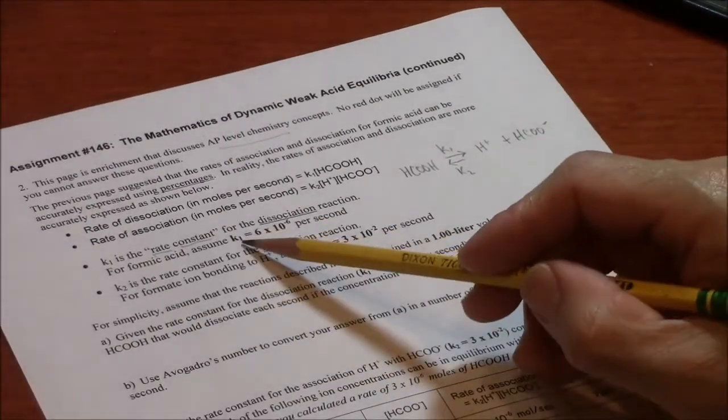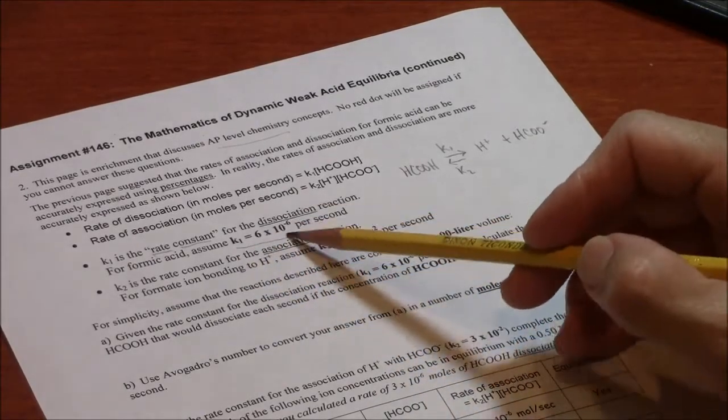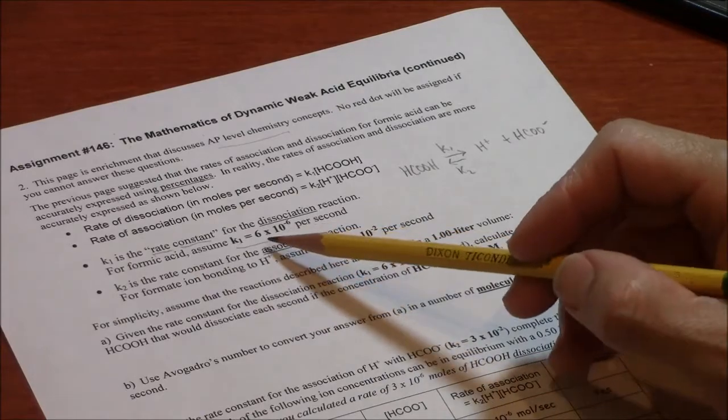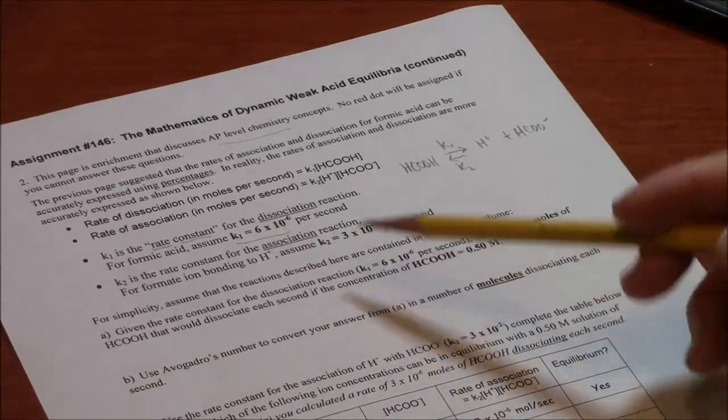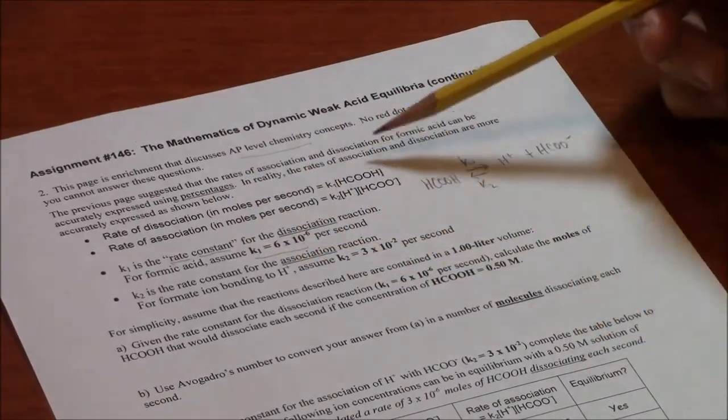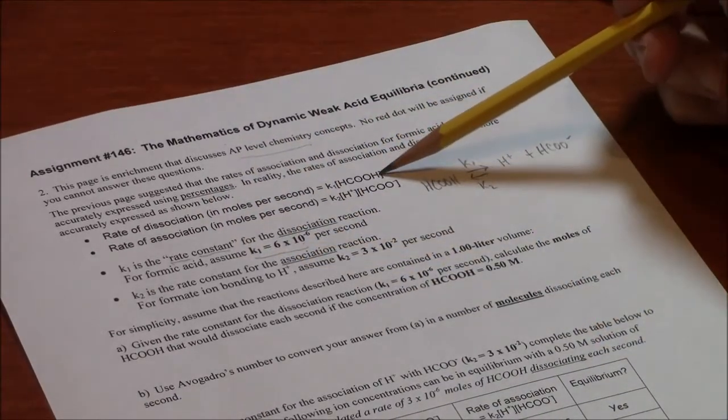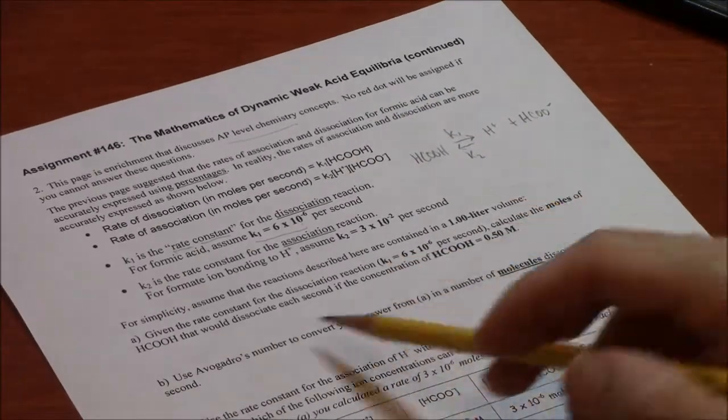So here is a reasonable number for a rate constant for the dissociation of a weak acid. You see now it's not a percentage. It's 6 times 10 to the minus 6. But the rate of dissociation will be that K value times the molarity, the concentration of the weak acid.